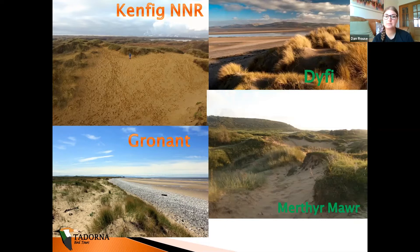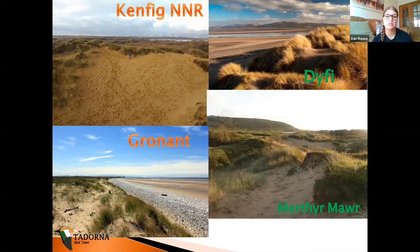Gronant's dune system is completely different to the others — it's a very flat dune system with almost doomed ridges rather than large dune slacks. These ridges are perfect for things like shore larks and snow buntings. It's a very important area for seabirds: a lot of terns use it for nesting, as do ringed plover and oystercatchers.